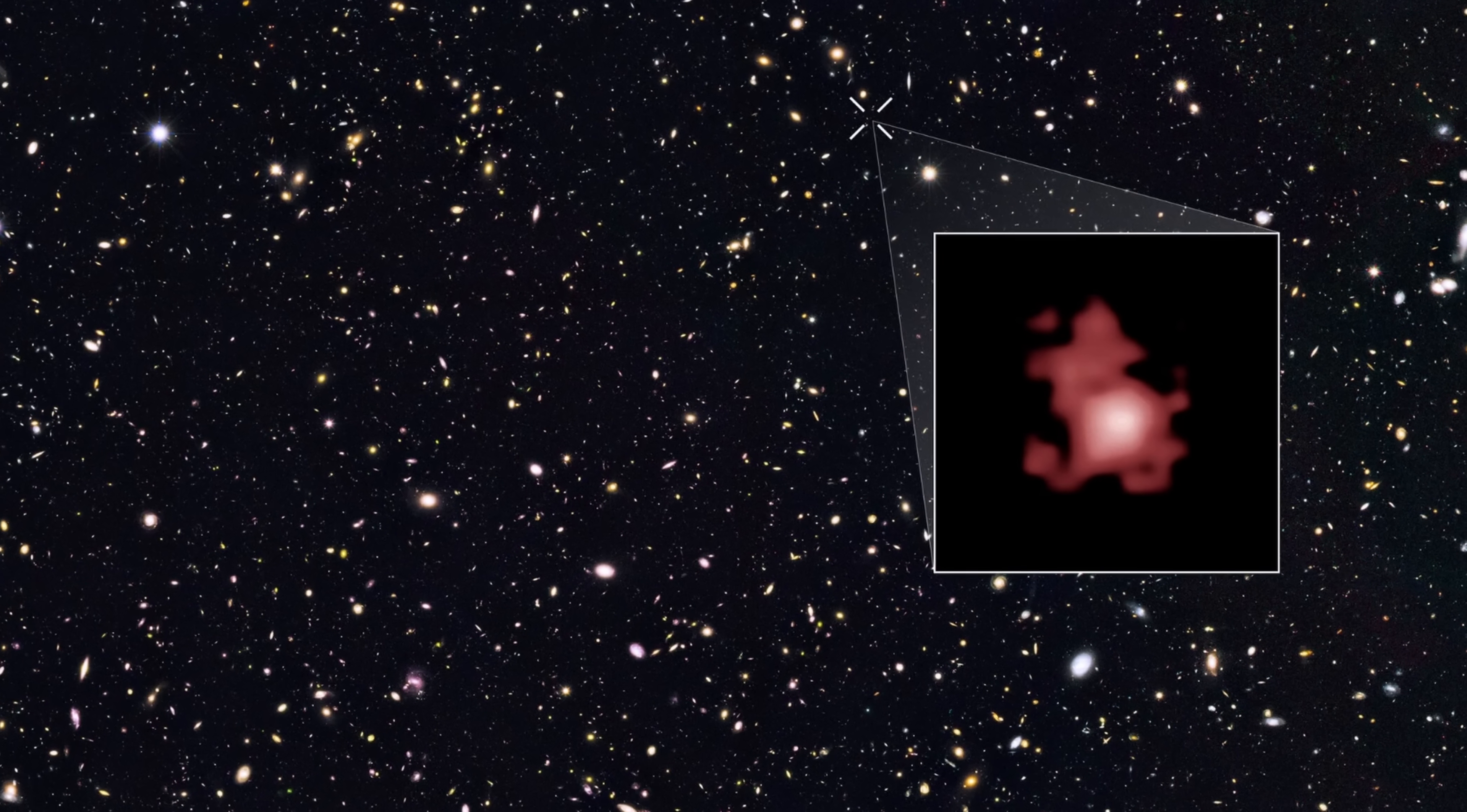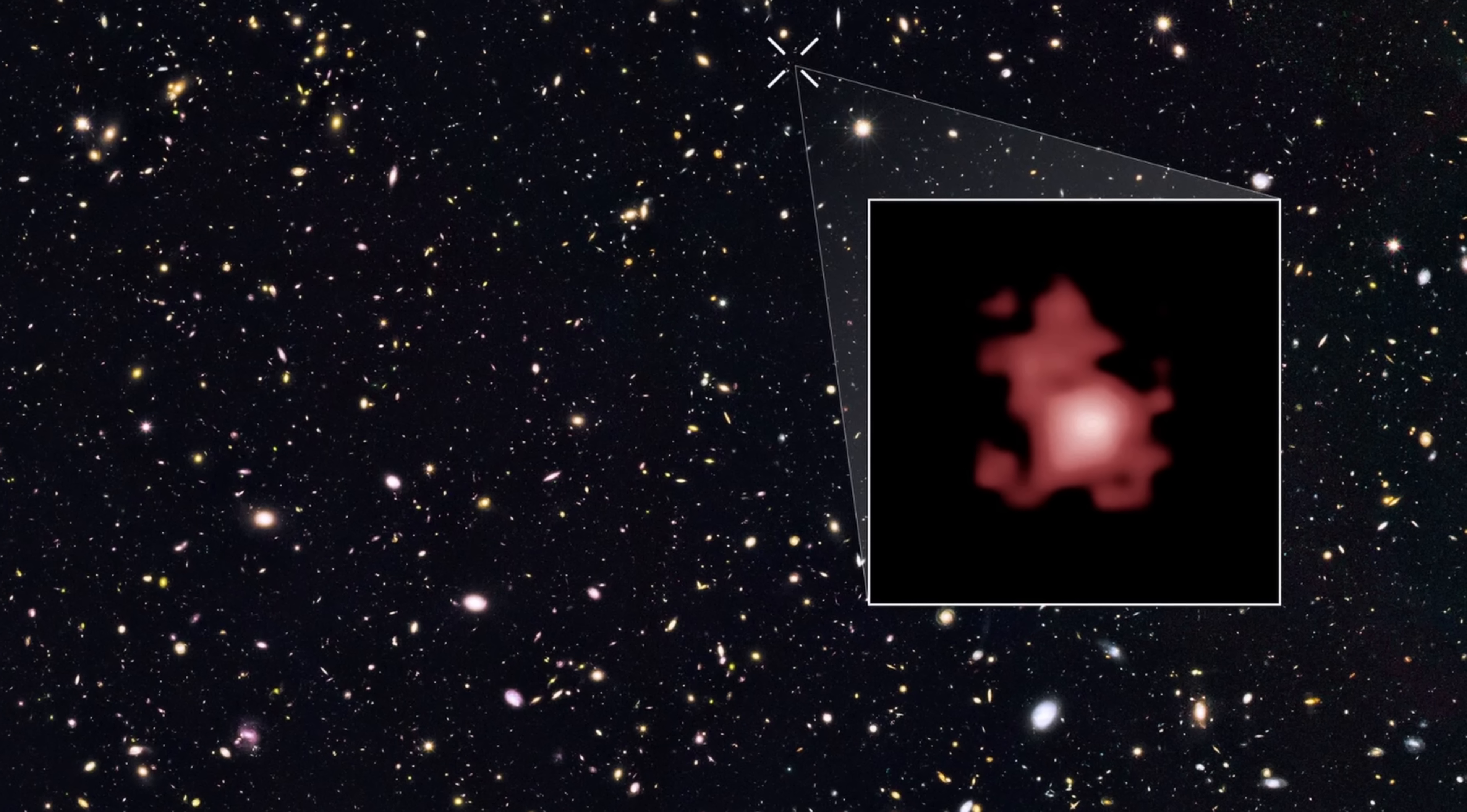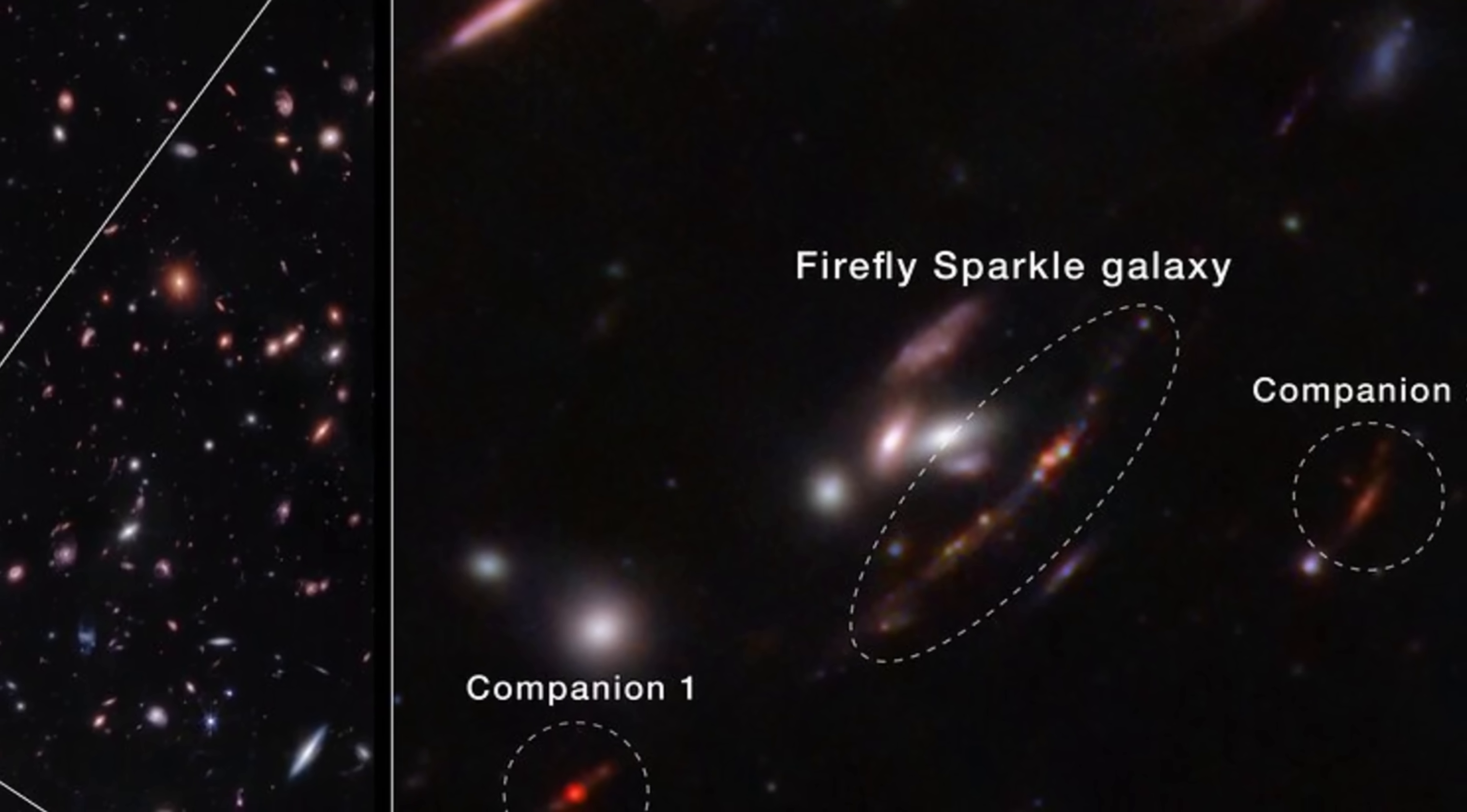Here's for example one of the previous record holders for the distance, the galaxy known as GN-Z11 at a slightly higher redshift of 11. And so here we don't really see any structure, we just basically see a kind of a smudgy spot. But here astronomers got a little bit lucky.